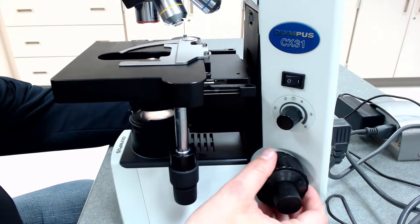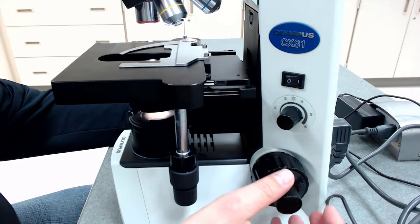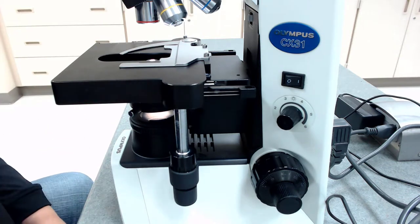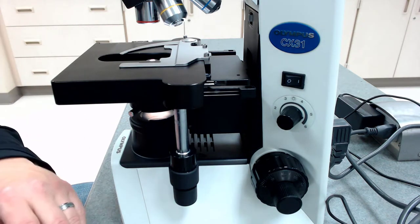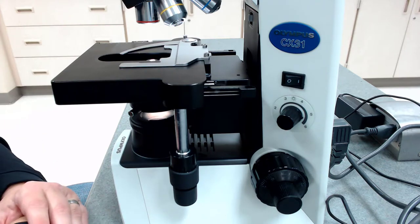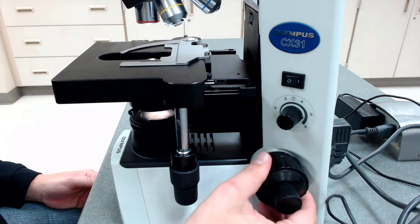So the coarse adjustment knob is what I use to get into the right ballpark. But to actually focus your specimen, you need the fine adjustment knob. So generally speaking, I only use the coarse knob for the first two objectives. So that's how you can control the light intensity and how you can move your slide.